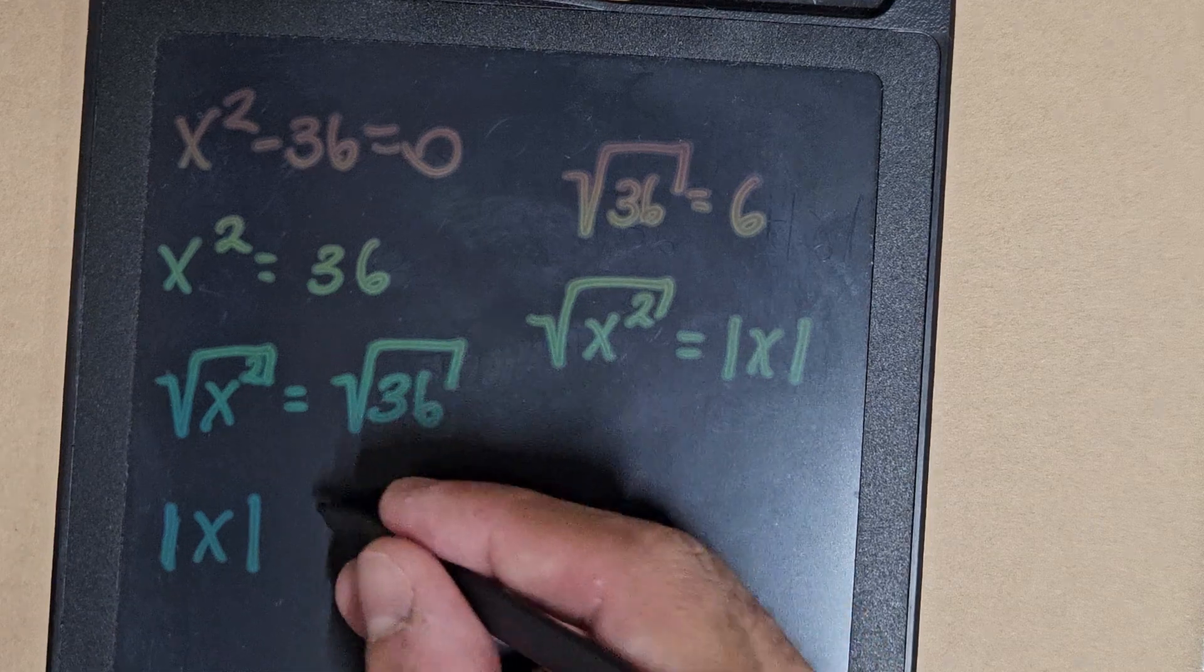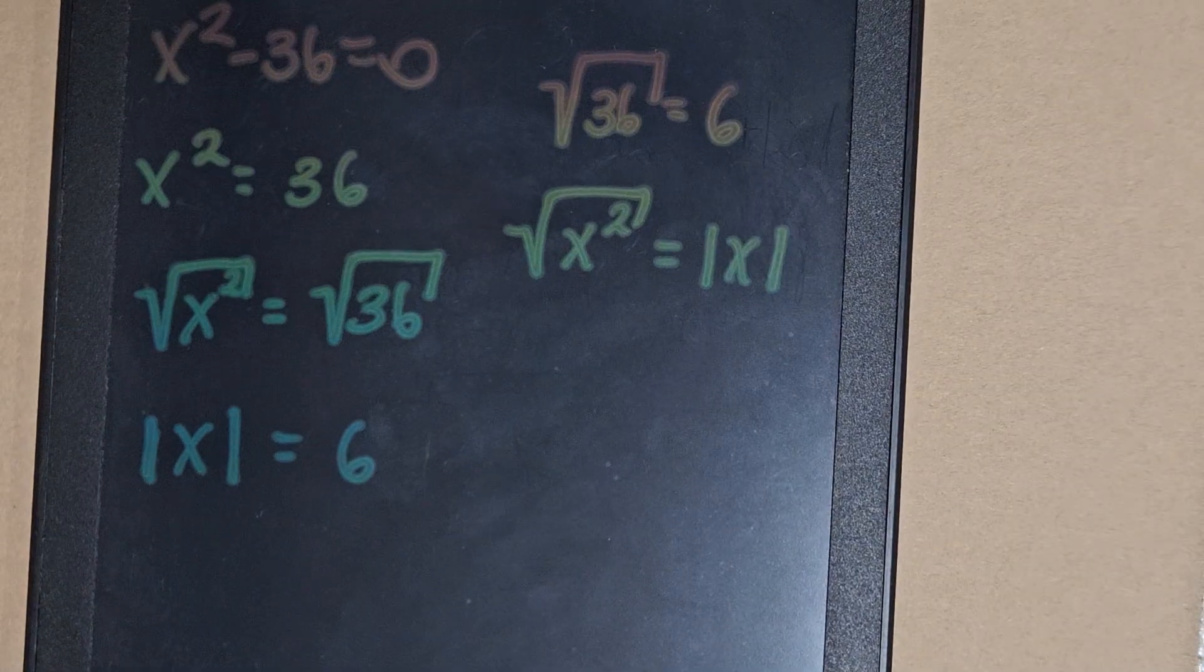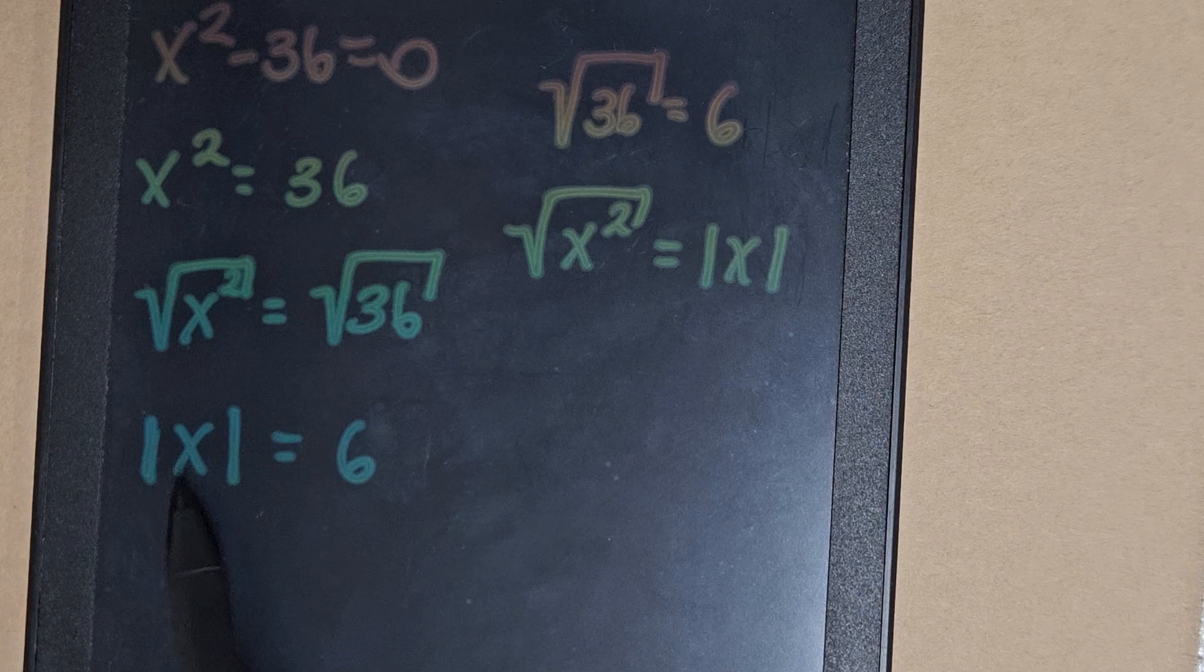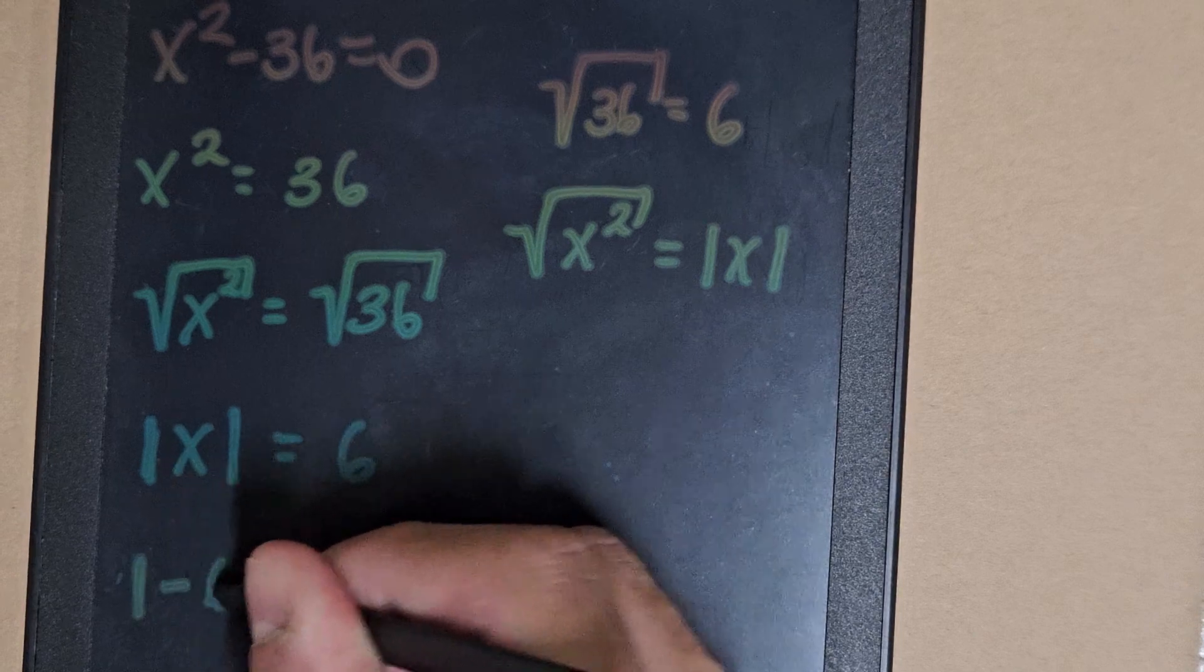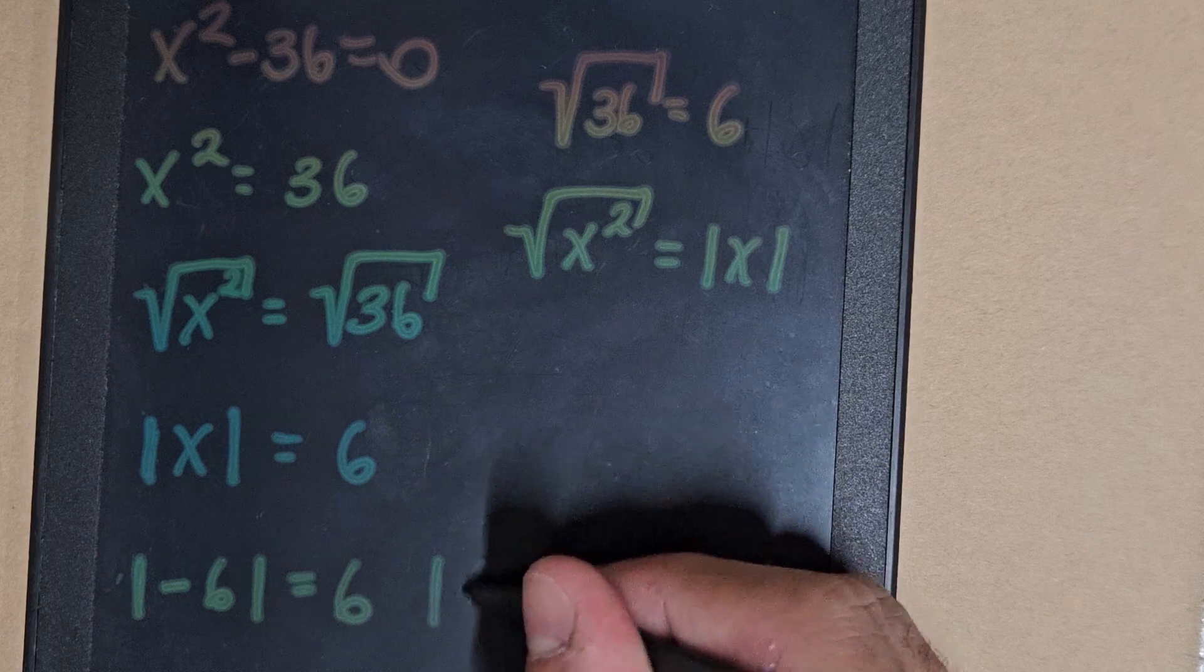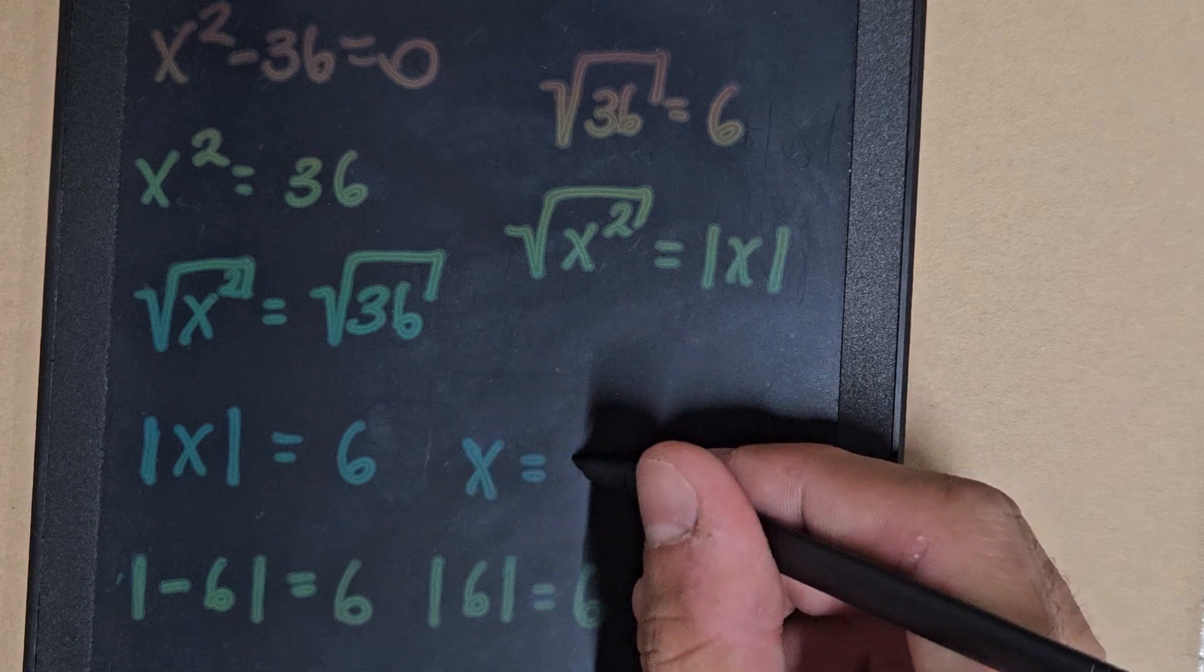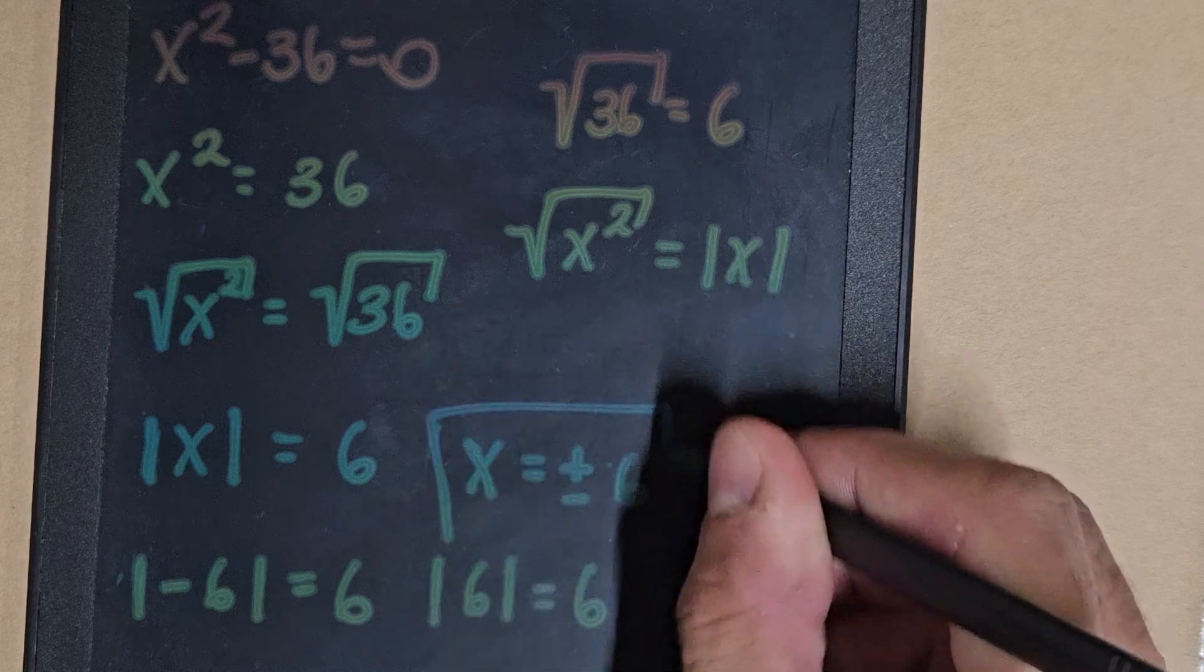Square root of 36 is 6, so we have two solutions to this equation because this number is in absolute value. The absolute value of minus 6 is 6, and the absolute value of 6 is 6. So x is positive and negative 6. That's the answer to this equation.